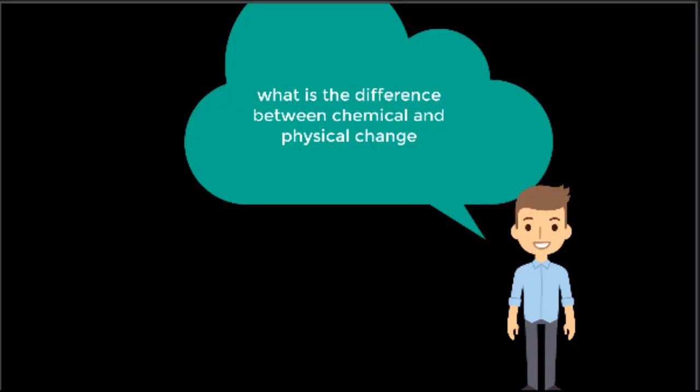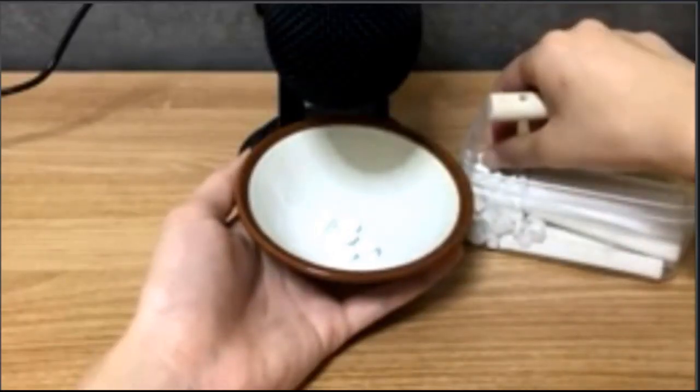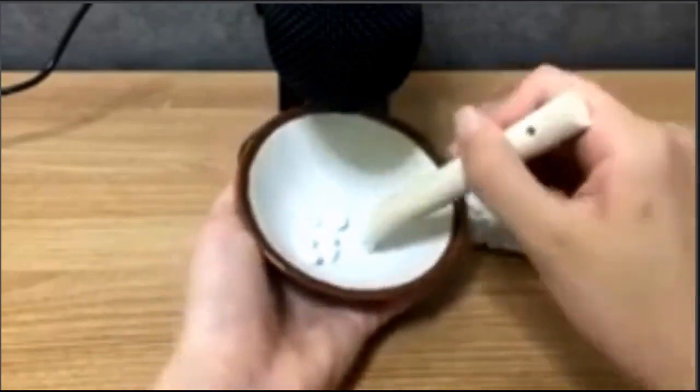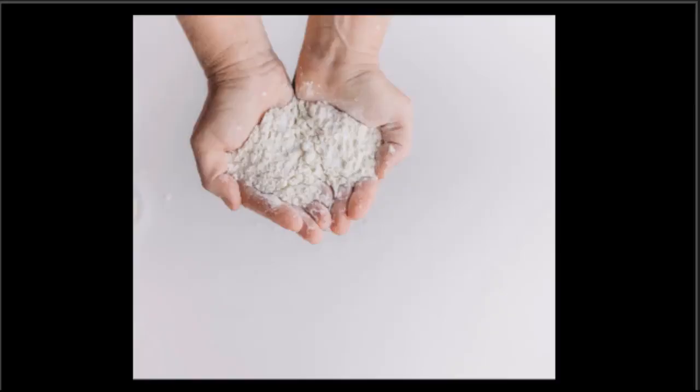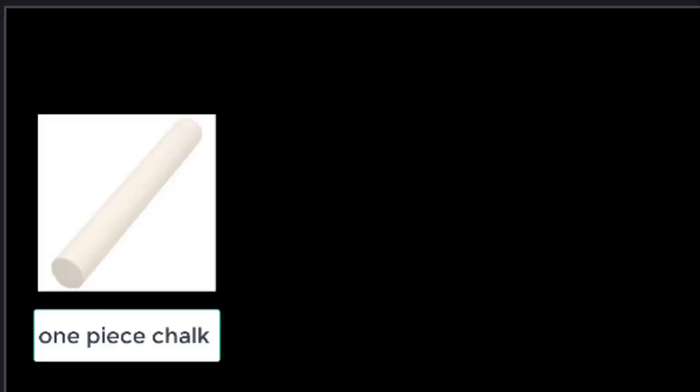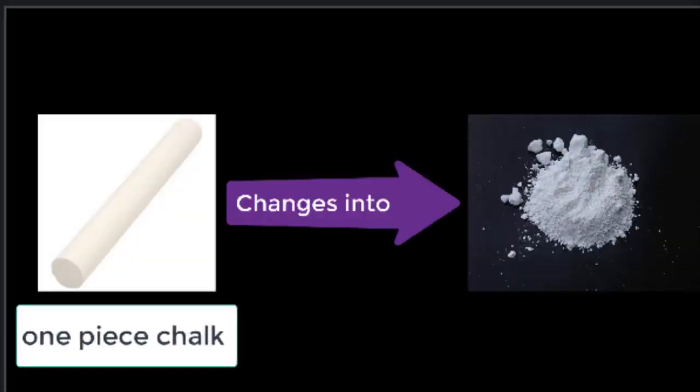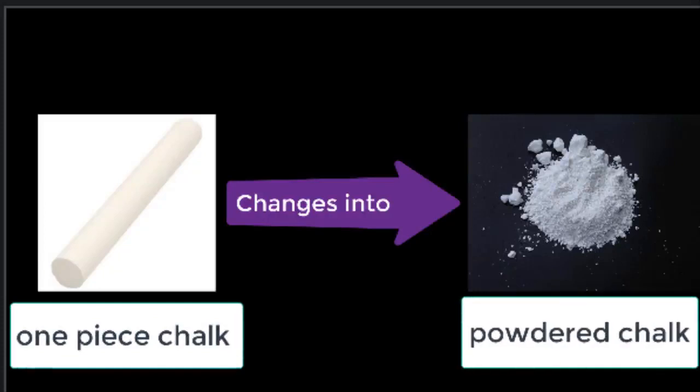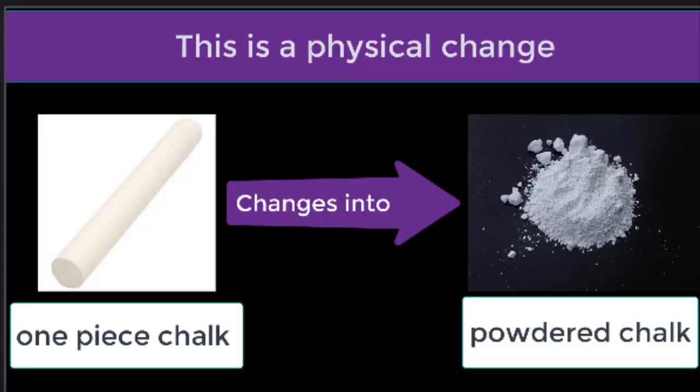First, what is the difference between chemical and physical change? Let's consider white chalk. If we grind this white chalk, we are going to obtain white powder. So a one-piece chalk changes into powdered chalk. Actually, the identity of chalk didn't change, only the aspect did. This is what we call a physical change.